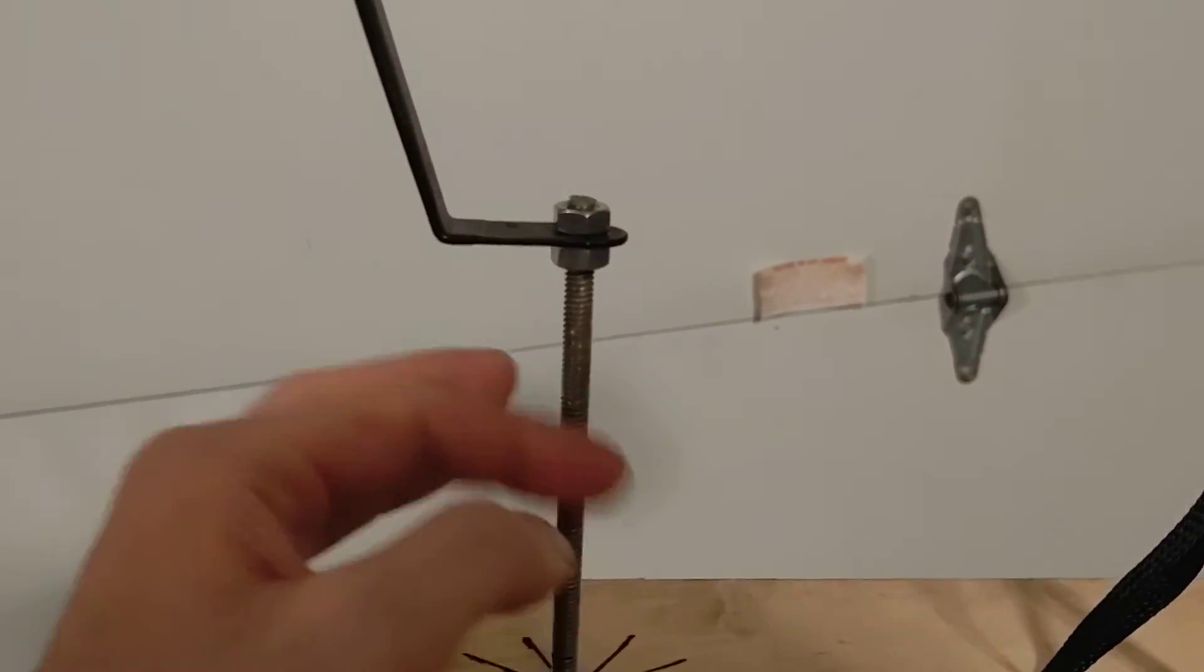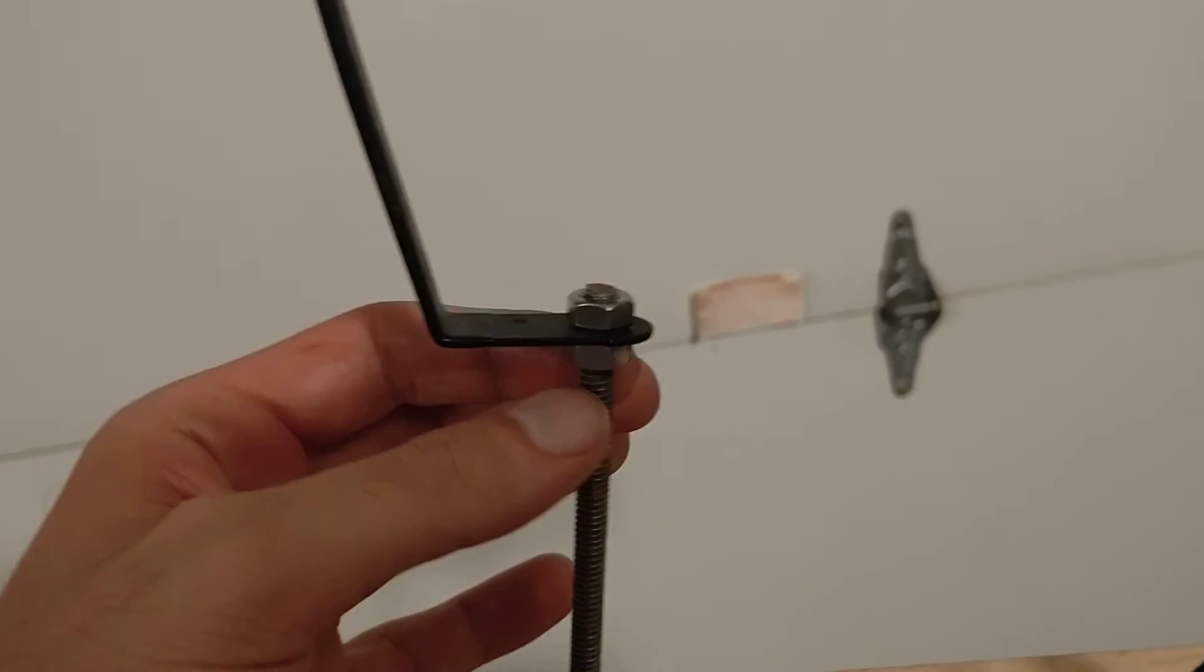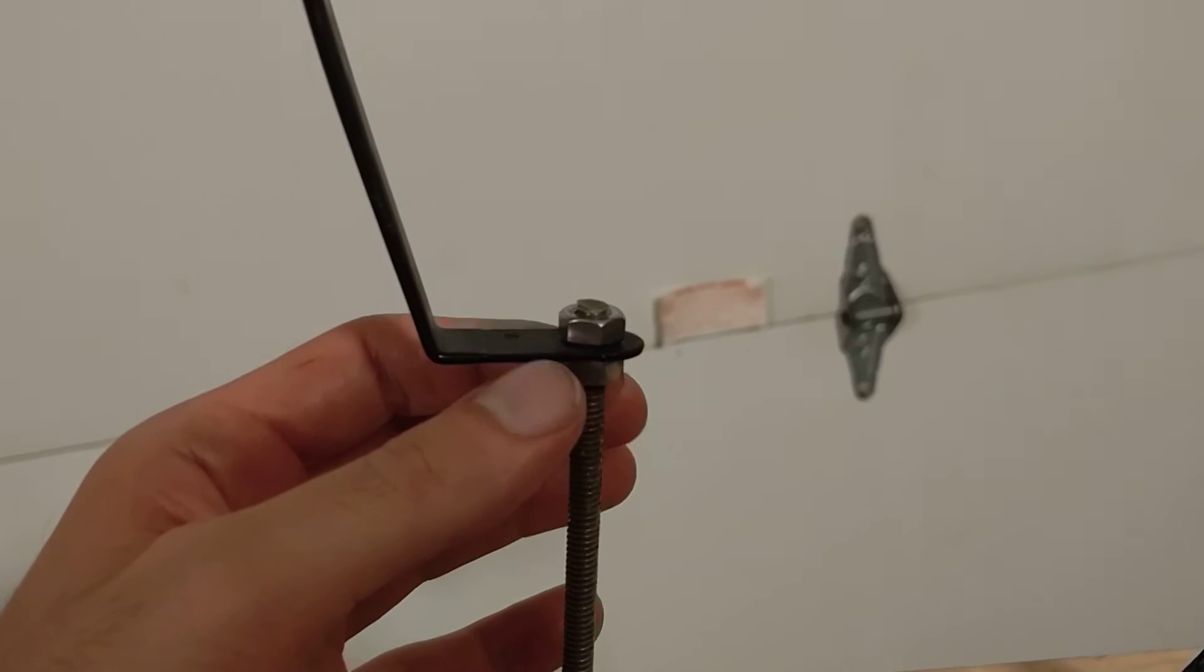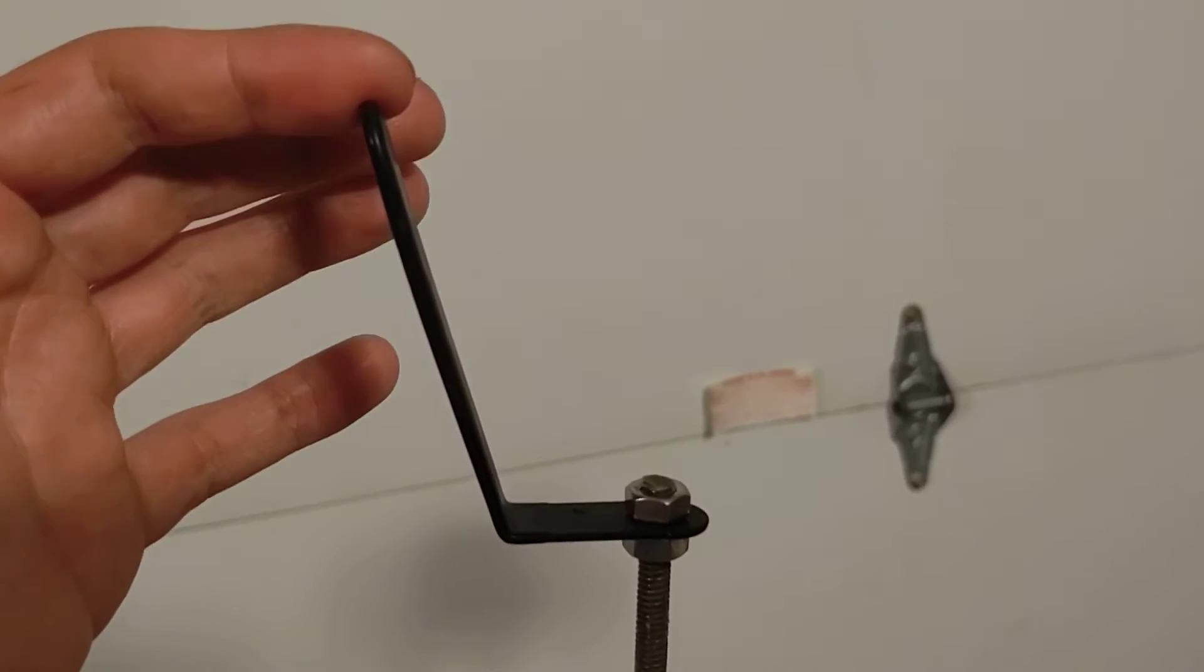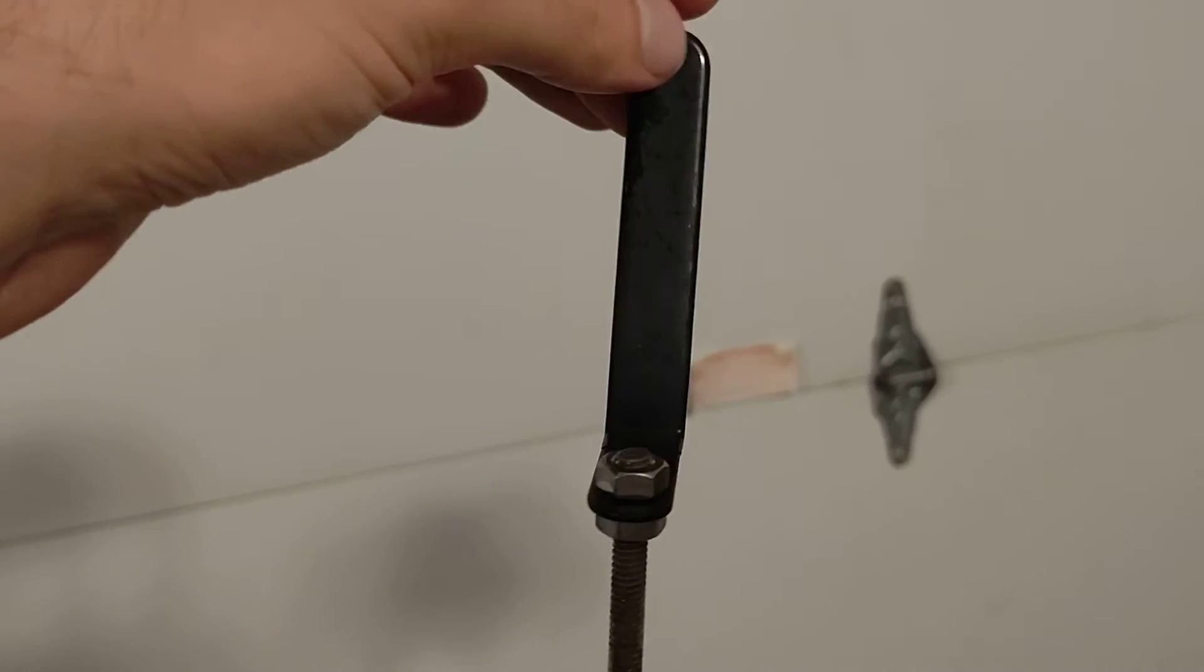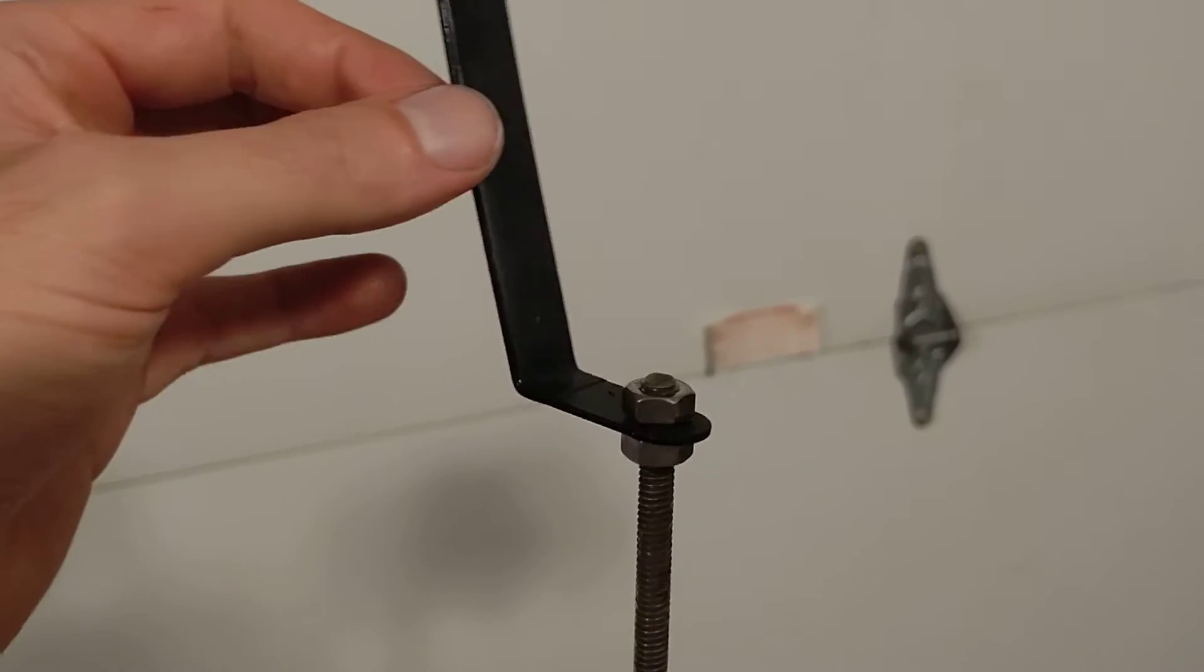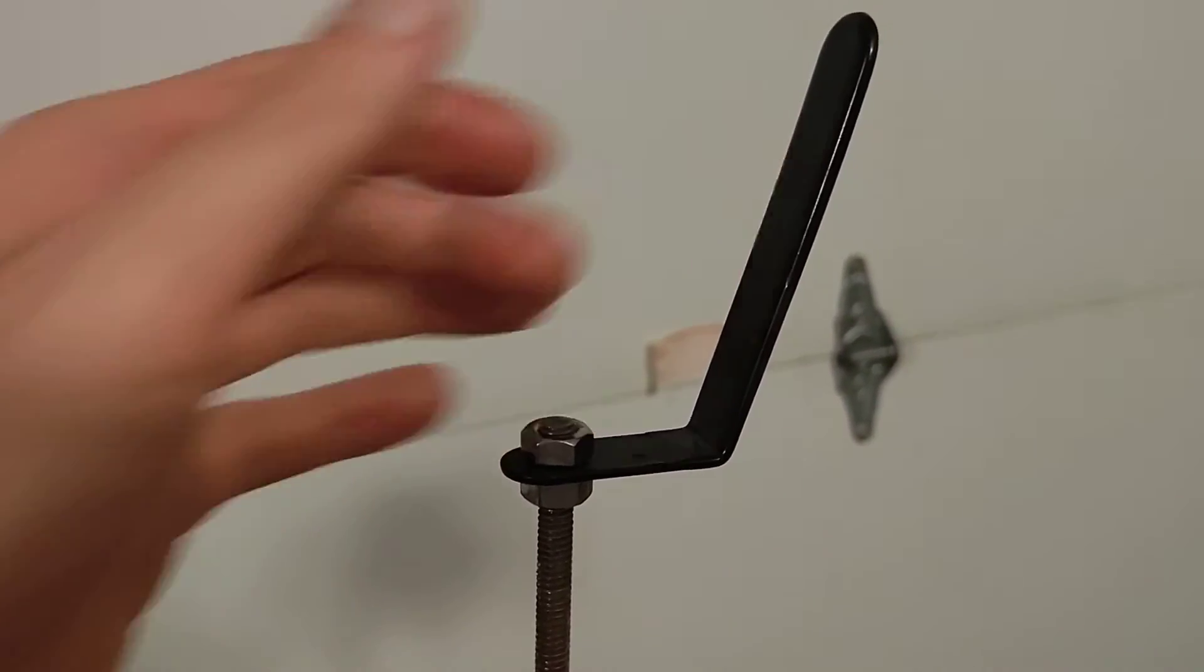I have a threaded rod here - I don't remember the length, I think this was just in the junk box. A couple nuts, and this handle that I also found in the junk box that turns very nicely. Once every 30 seconds for a wide angle photo I'll turn it clockwise like that.